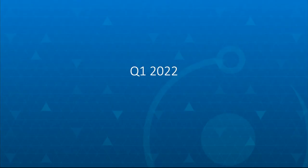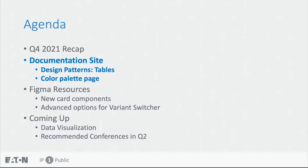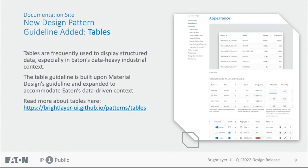Now back to Q1 2022. First, let's talk about the documentation updates. In Q1 2022, we added a new design pattern: tables. Tables are frequently used to display structured data, especially in Eden's data-heavy industrial context. The table guideline is built upon Material Design's existing guideline, but we expanded on that to better suit Eden's data-heavy, data-driven industrial needs. You can read more about the tables at the link at the bottom.